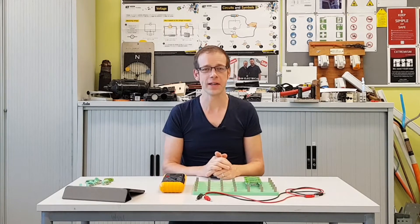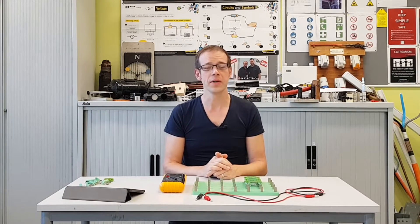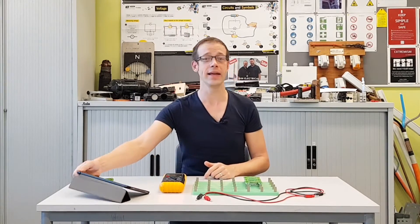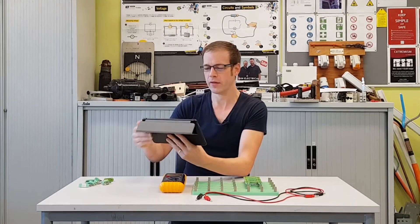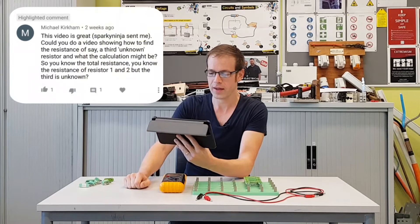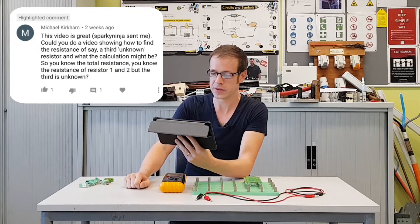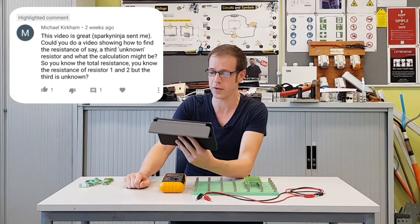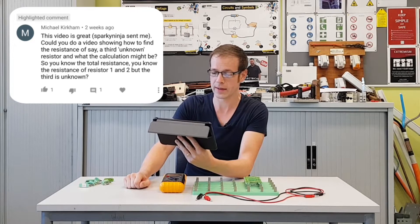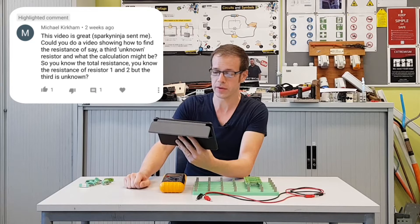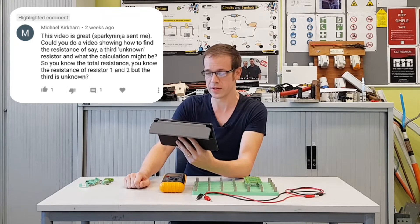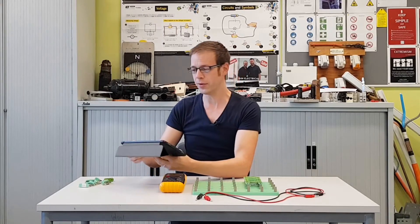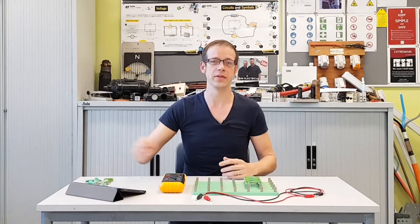Welcome to this Electrical Principles training video. In this video we're going to answer a question from one of our viewers. We have been literally inundated with a request from Michael Kirkham, who asked could you do a video showing how to find the resistance of a third unknown resistor and what the calculation might be. So you know the total resistance, you know the resistance of resistor one and two, but the third is unknown. Well Michael, you asked for it, so that's what we're about to view.